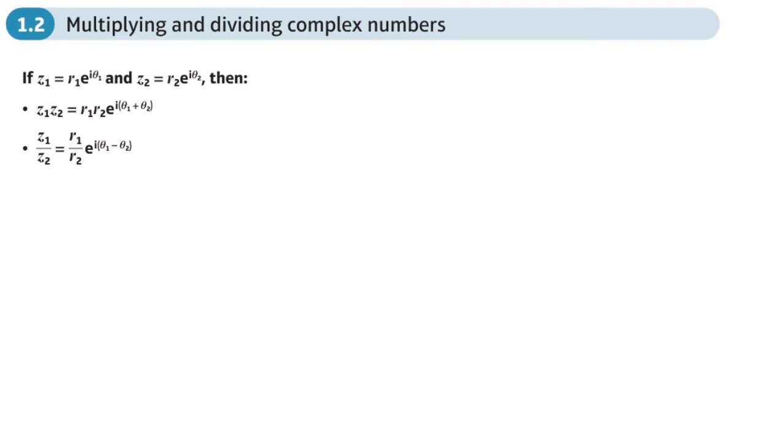This is the second section in the complex numbers chapter, Core Year 2. In the last section we saw how we could write a complex number in exponential form. Now you'll see some of the advantages of writing a complex number in exponential form.